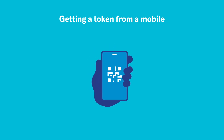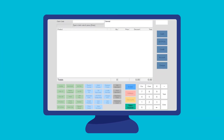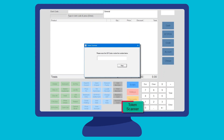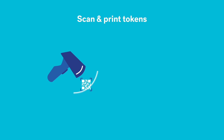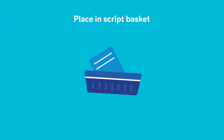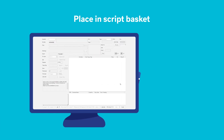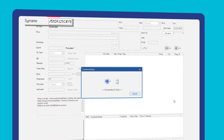Now let us show you how it actually works in Minfos. When a patient comes into your pharmacy with an e-prescription on their phone, to get a copy of the token from your patient's phone, go to Minfos Till and click on the token scanner button. Then scan the token and it'll appear in the token scanner dialog box, and Minfos will print the token on the docket printer. Place the paper tokens into the script basket along with any paper prescriptions.